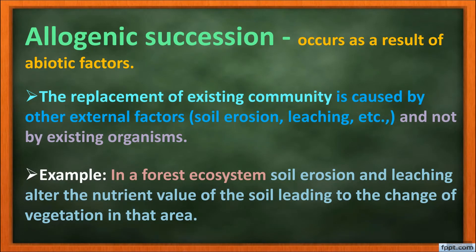Allogenic succession occurs as a result of abiotic factors — the replacement of the existing community is caused by external factors like soil erosion and leaching, not by the existing organisms. For example, in a forest ecosystem, soil erosion and leaching alter the nutrient content of the soil, leading to a change in vegetation in that area.